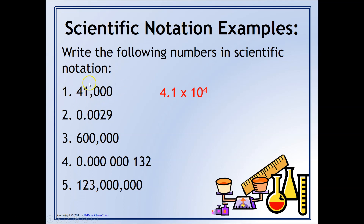This number is also greater than one, and that's why the exponent is positive. In the next example, this number is clearly less than one, so we're absolutely going to see that our exponent is going to be negative. But we still need to get that decimal point in between the two and the nine. So we're going to move this decimal point three places to the right. Our coefficient is going to be 2.9, and then it's times ten to the negative three — negative because this number is less than one.